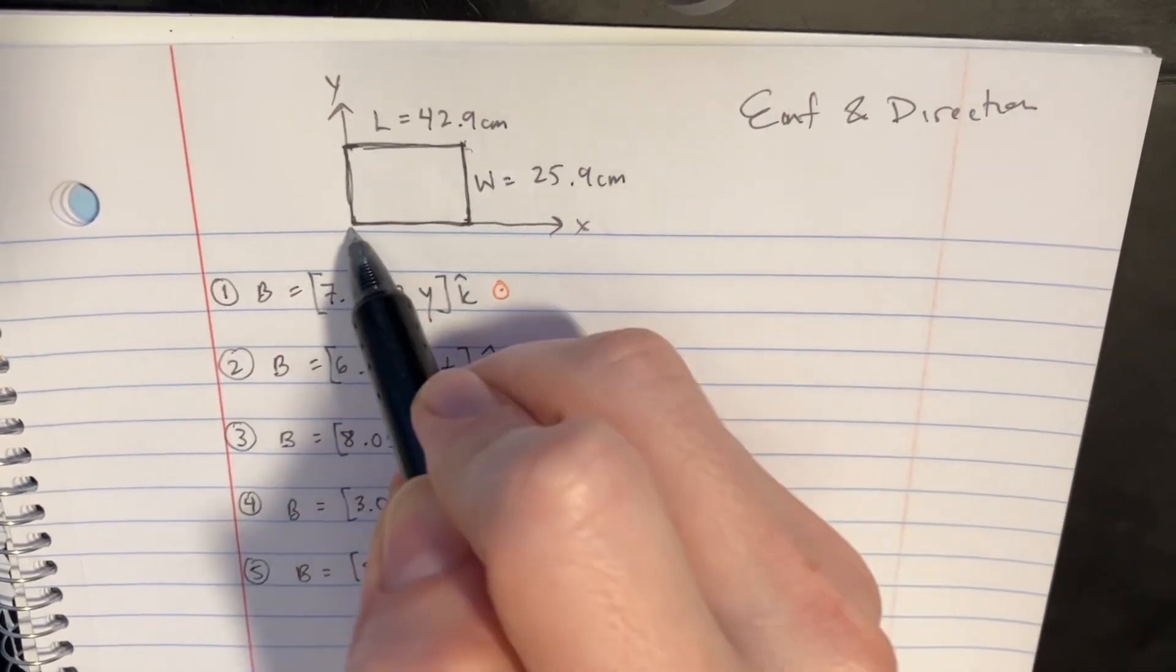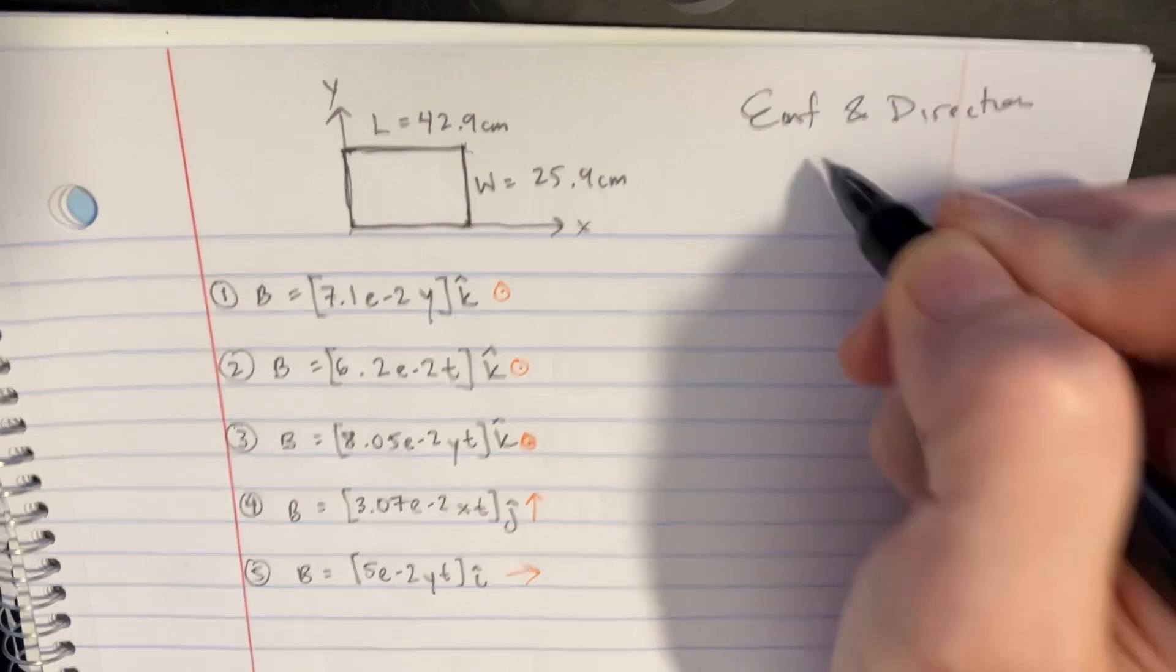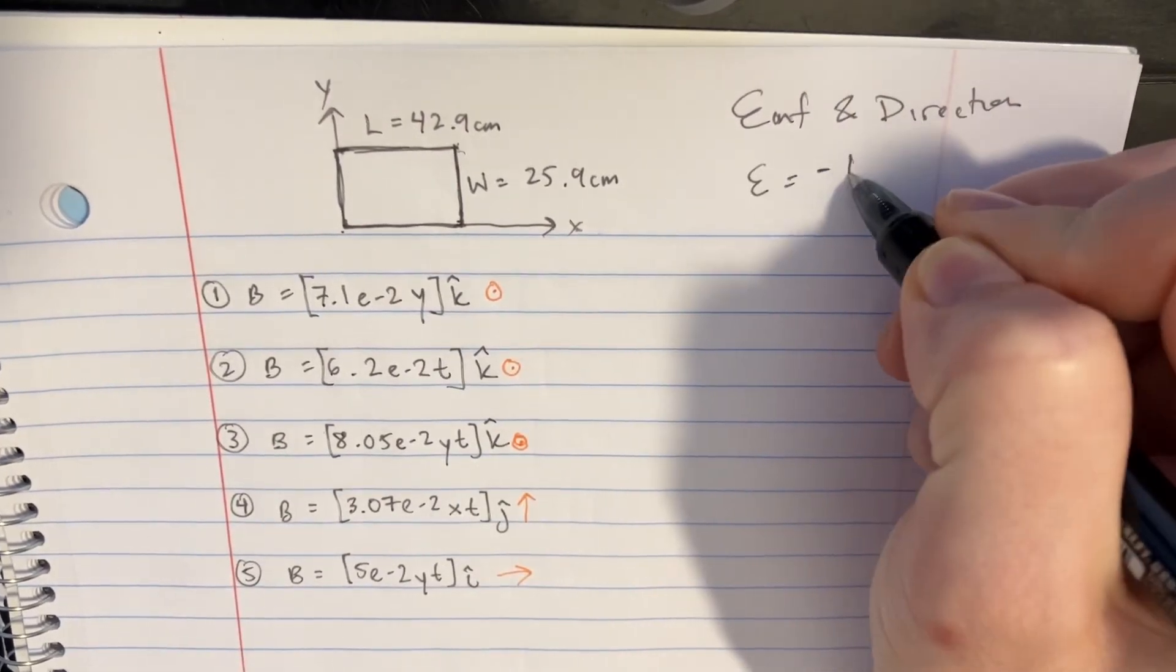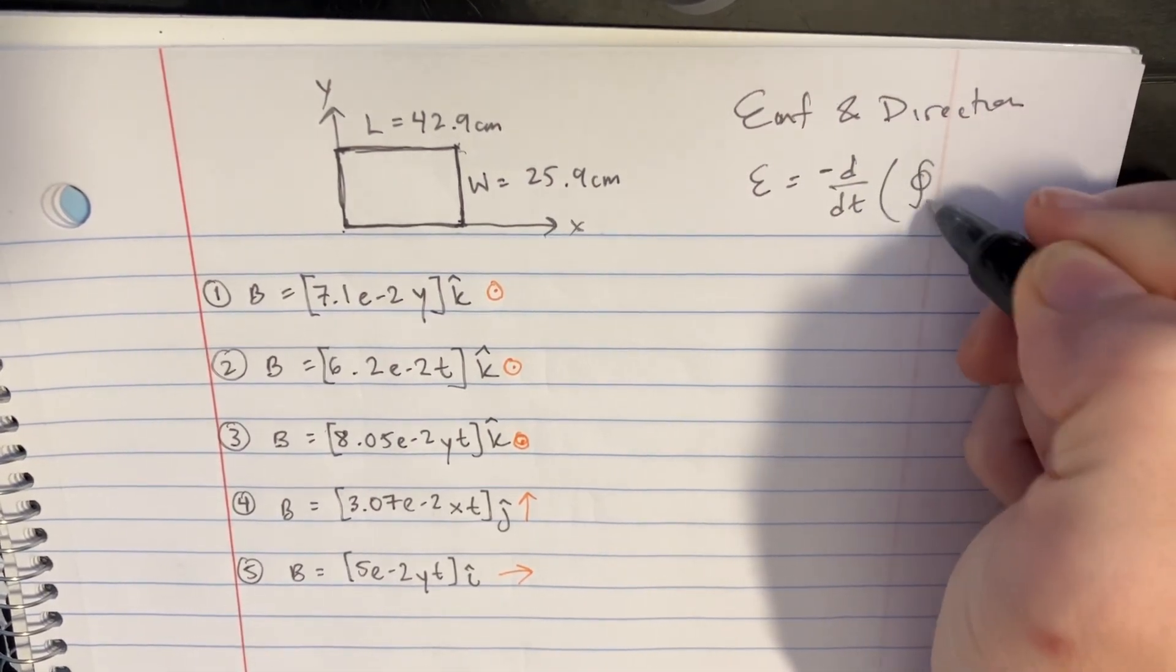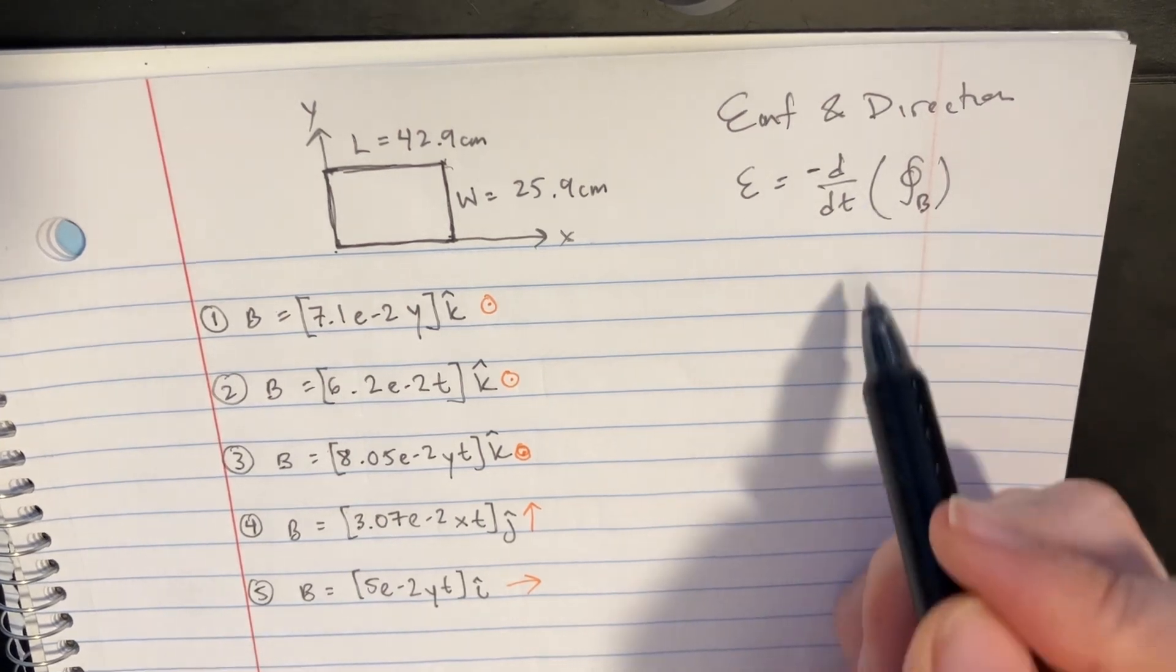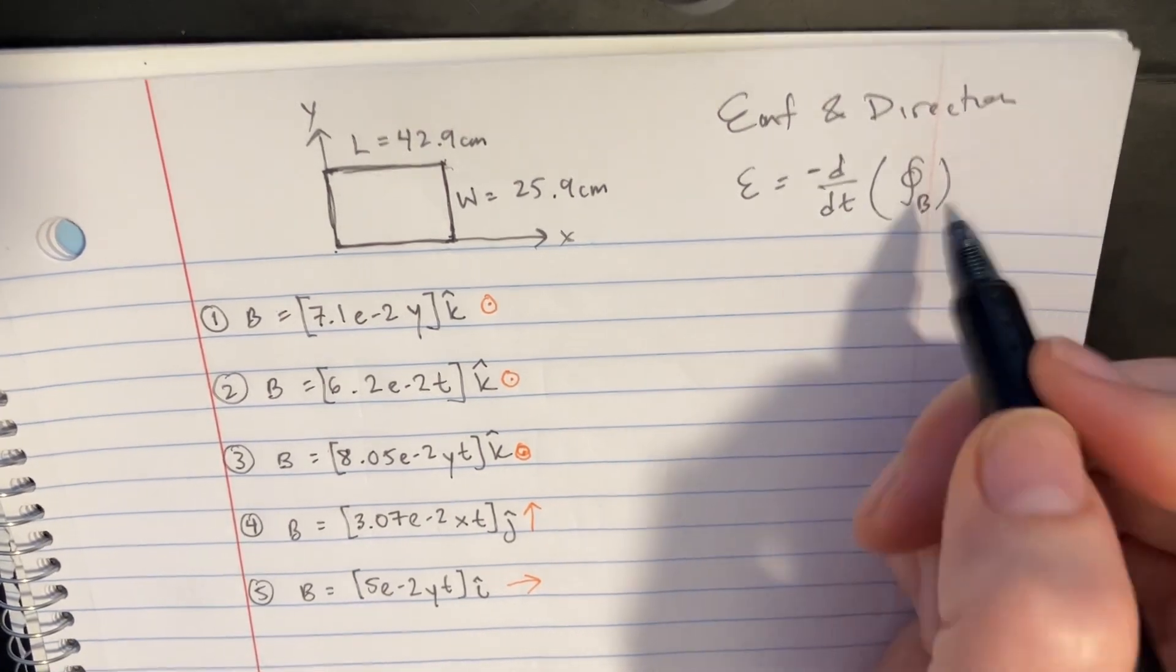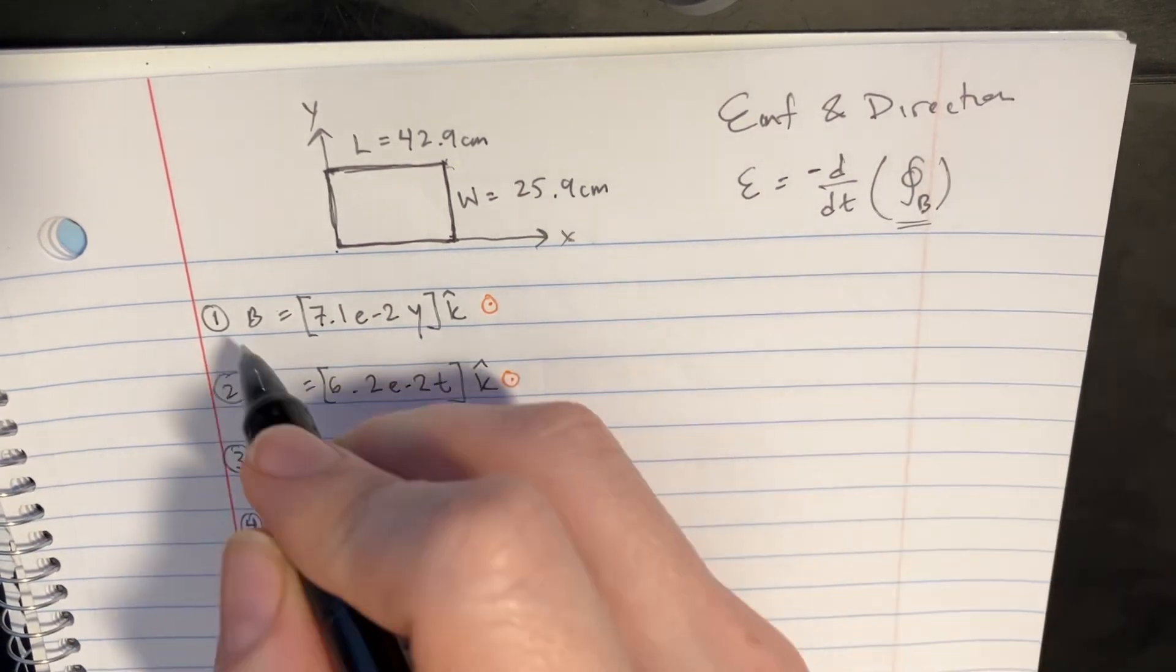We've got this area being placed inside of it, and we're going to try to figure out what the EMF is. The EMF for every case is essentially going to be negative d over dt, and then we're going to have the magnetic flux there. But we're asked for the magnitude, so let's just ignore that negative sign. Let's try to set up the flux equation for all of these.